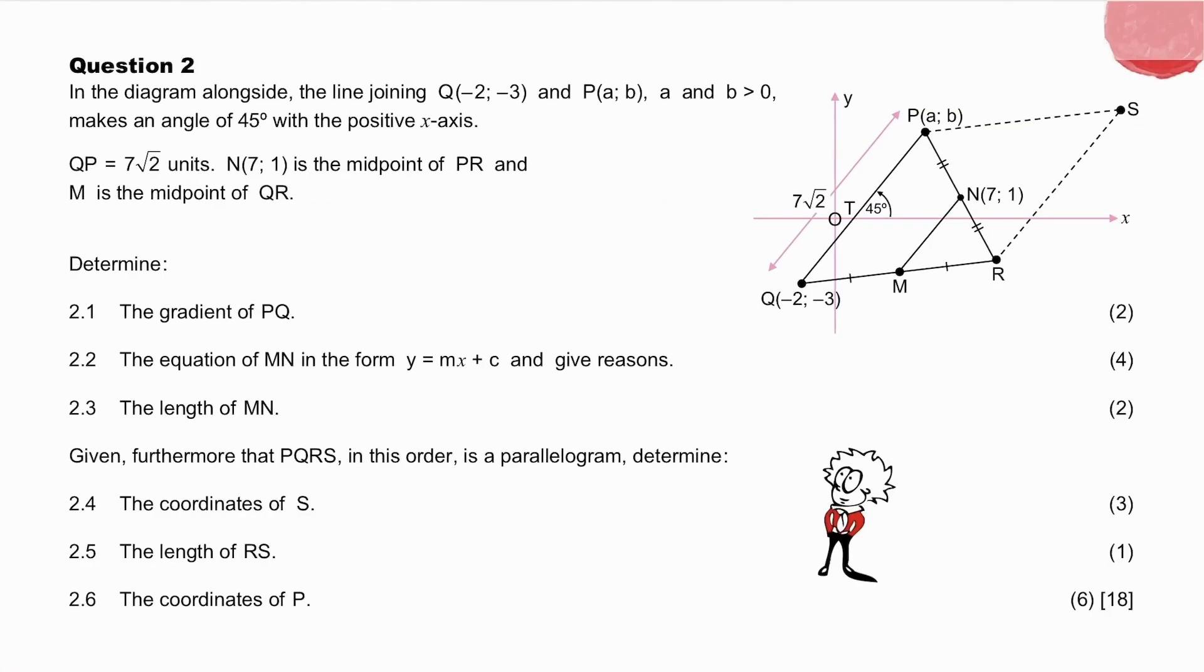Now pause while you try question 2. Did you notice the significance of the information? Let's go through this question together. The angle of 45 degrees in this drawing is the angle of inclination of the line PQ. The length of QP is given. And N and M are the midpoints of two sides of a triangle, and the midpoint theorem applies. Therefore, MN is parallel to PQ, and the length of MN is half the length of PQ. And now, when you read the questions, analyze what you need.